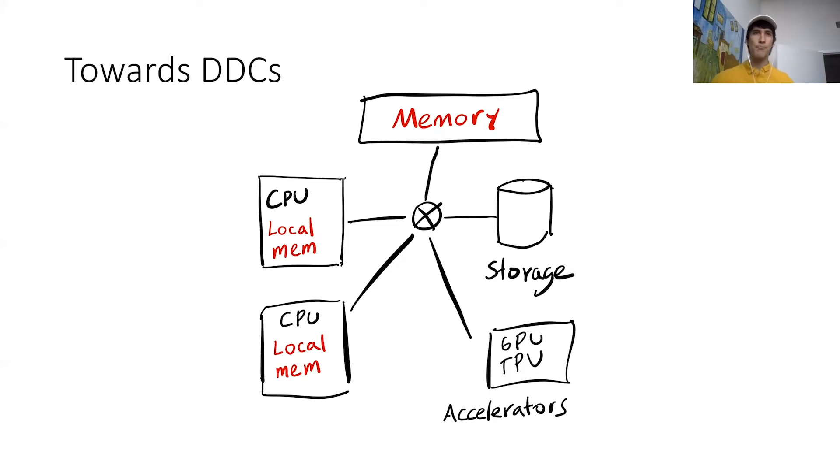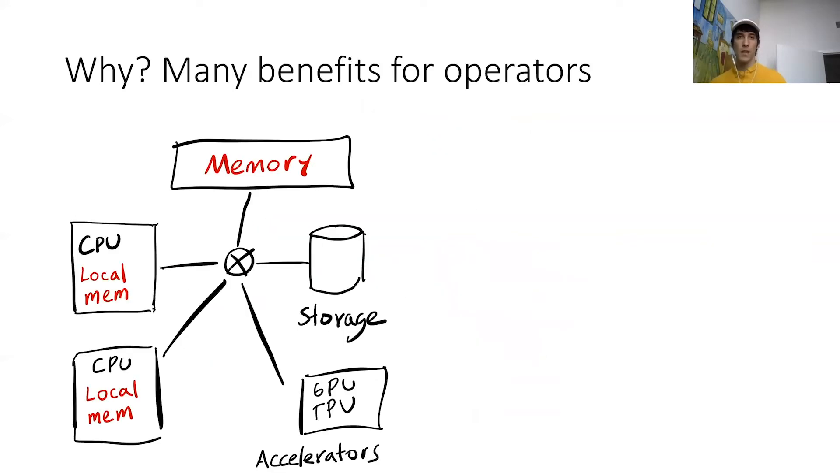The local memory is going to serve two roles: first, it's going to store the operating system because we still need someone to actually manage the server's resources, and second, it's going to serve as a cache for application state. So even though the stack, the heap, the program code all live off-chip in the big memory blade, some of it is going to be cached locally.